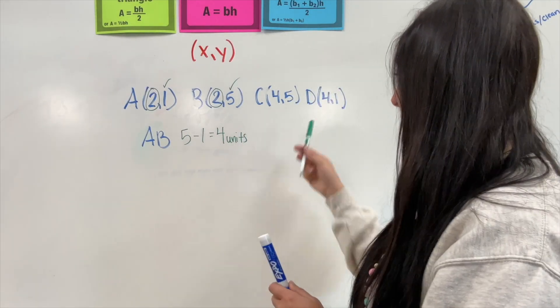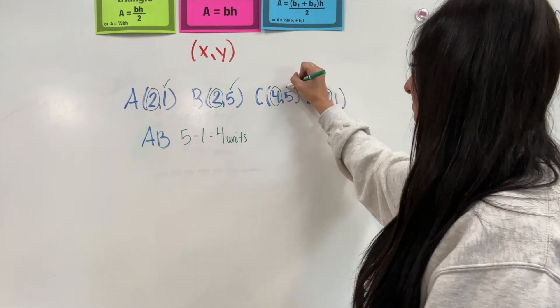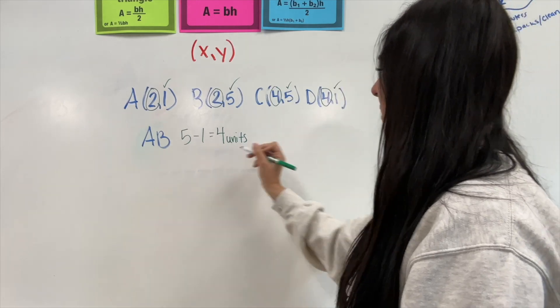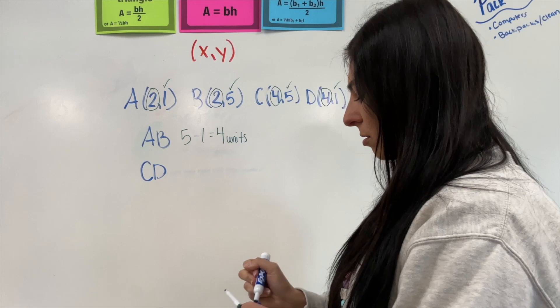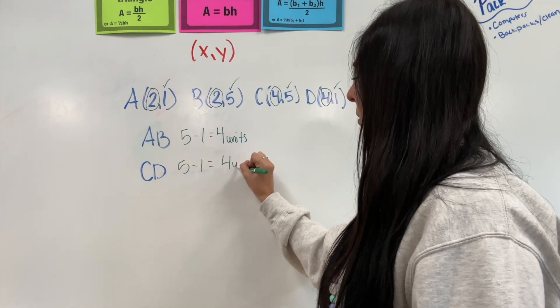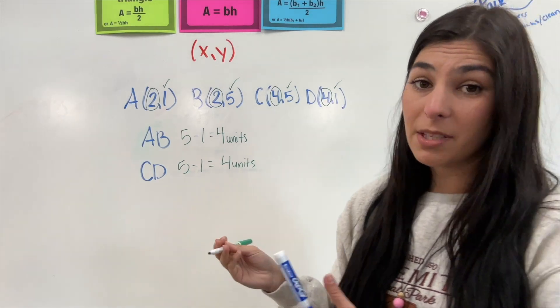Now, I'm going to go to the next one where I see that we have our fours match in the X. So, I am looking at our Y's. So, this is for coordinates C and D that match. That's four units. Now, this gives me a clue that I am dealing with a rectangle.